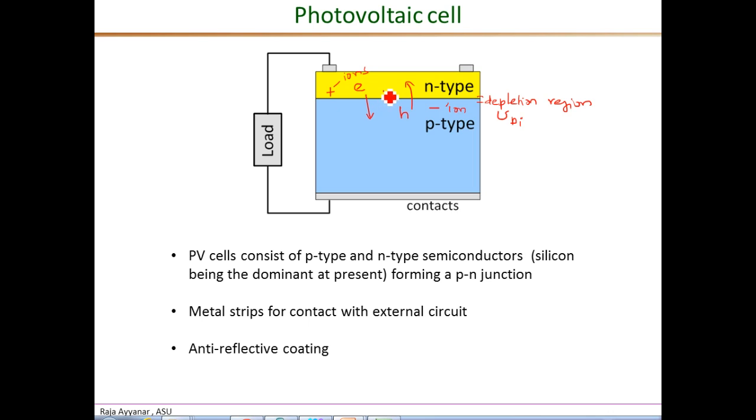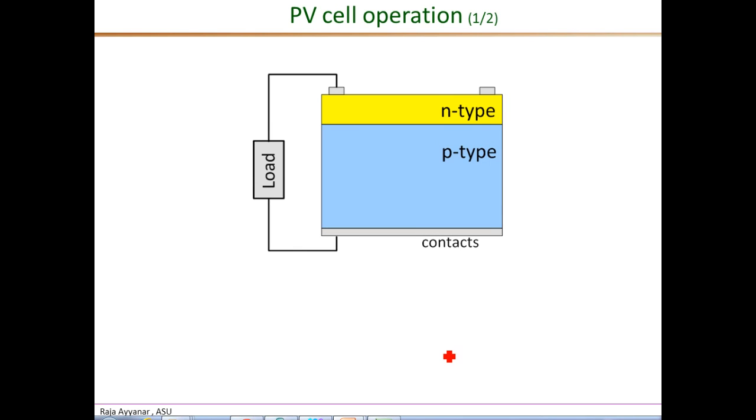It is this electric field, positive here and minuses here, which facilitates the movement of the carriers through the external circuit and not completely lost in recombination. The main basis of photovoltaic power generation is the creation of charged carriers, electrons, by photons of sufficient energy content from the sunlight.